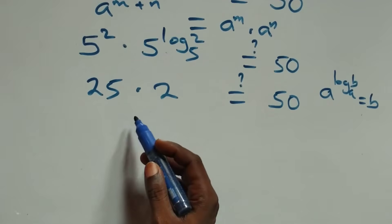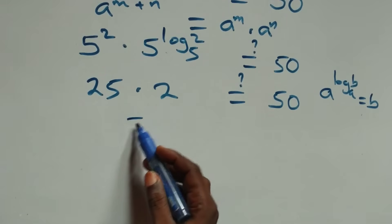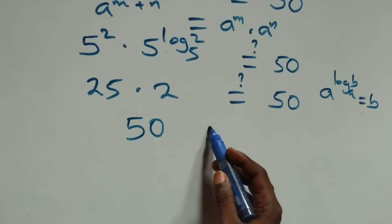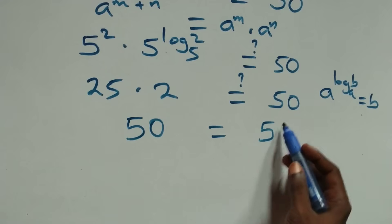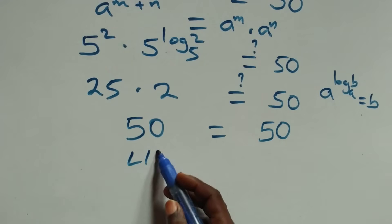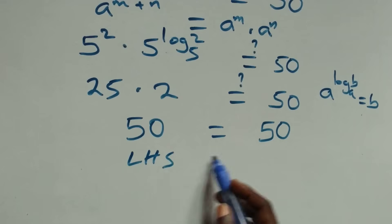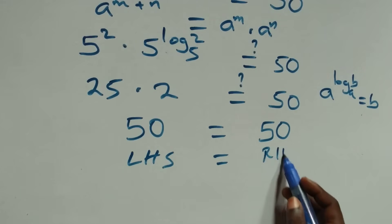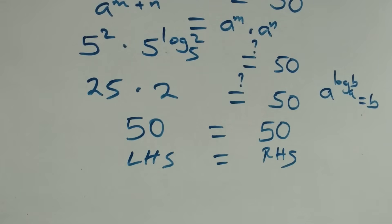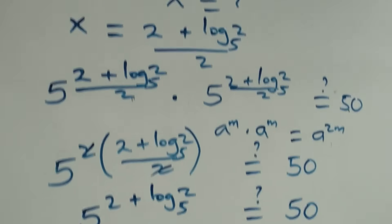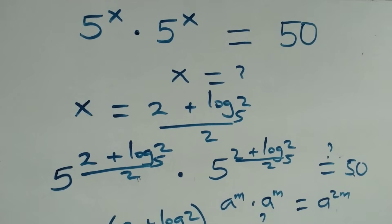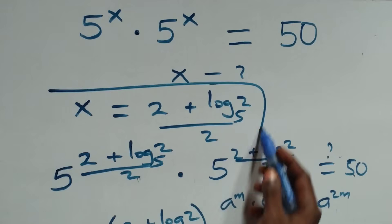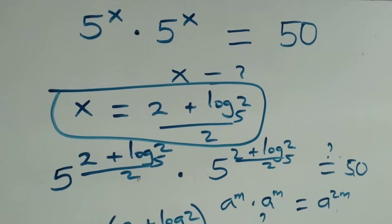And 25 times 2 gives us 50, which equals 50. We have the left hand side equals to the right hand side. And therefore, we conclude that x equals to (2 + log₅2) / 2 satisfies this given problem.